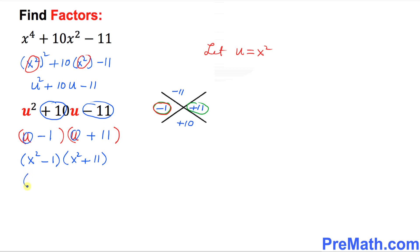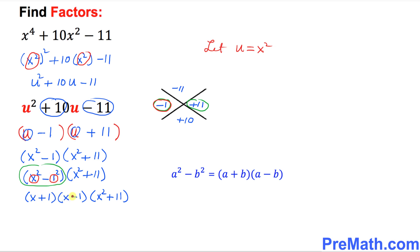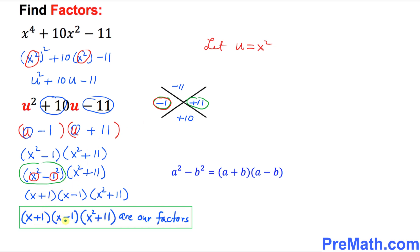Now I want to manipulate a little bit more. x squared minus 1 can be recognized as a difference of two squares — x squared minus 1 squared. We can write this as the product of a sum and a difference: (x + 1)(x - 1). Then bring down the x squared plus 11. So the complete factored form is (x + 1)(x - 1)(x² + 11).